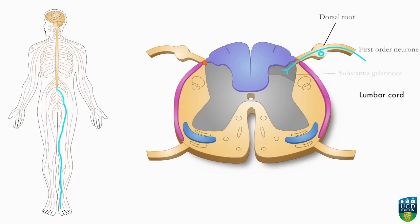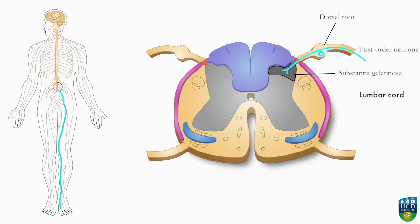Most of the first order axons travel to the substantia gelatinosa in the tip of the dorsal horn, while some may ascend one to two segments via Lissauer's tract. The first order neuron synapses on second order neurons in the substantia gelatinosa.